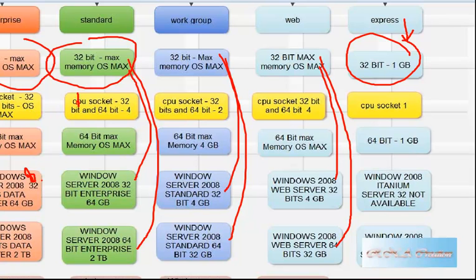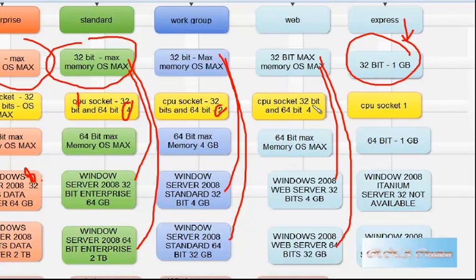Now let's look at how many CPU sockets are supported. For the Enterprise edition, CPU sockets for 32-bit and 64-bit refer to OS Max. For Standard edition it is 2, for Enterprise it is 4, and for another edition here it is 1.